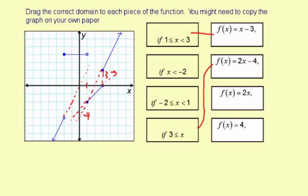And so the domain here, we're at negative 2 and then less than negative 2. And it doesn't include negative 2 as an open circle. So it's just x less than negative 2. So that one matches here.